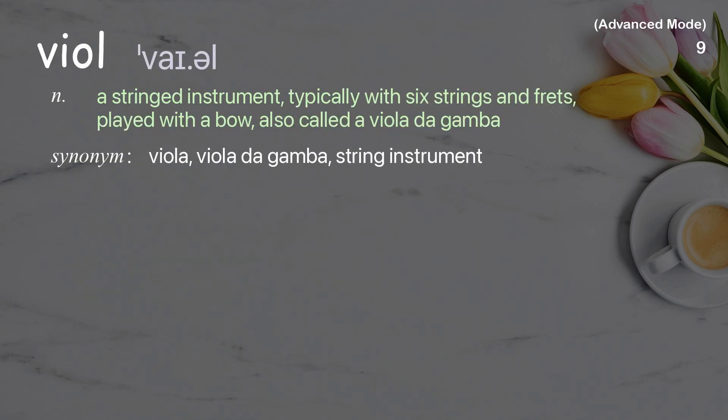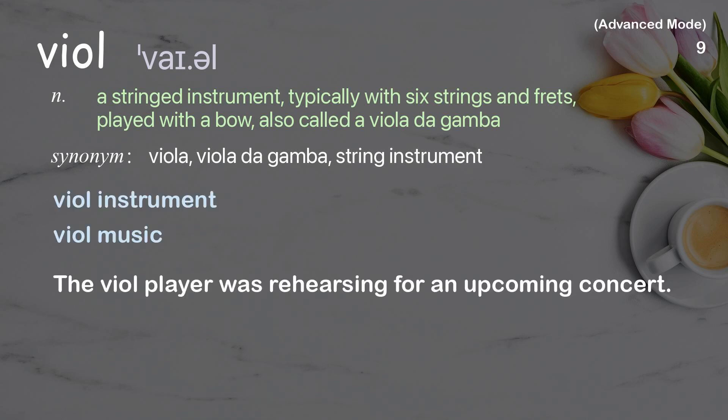Viol: a stringed instrument typically with six strings and frets, played with a bow, also called a viola de gamba. Examples: viol instrument, viol music, viol player. The viol player was rehearsing for an upcoming concert.